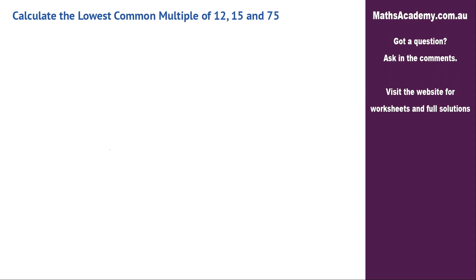Now, the way I like to answer these is as follows. I'll write down the three values. So we've got 12, 15 and 75. I'll draw a nice big L and I'm looking for a factor of 12, 15, 75, one of them, two of them or all of them.